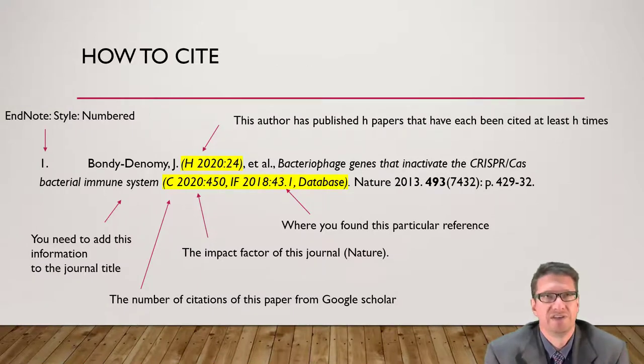As I said to you in a previous video, when you reference papers I want you to look at where you found the reference and look at the impact factor for that journal. So again the journal for this particular reference is Nature and you can see that its impact factor in 2018 was 43.1. Let's have a look at how you find that.